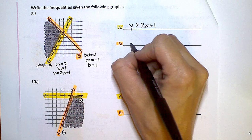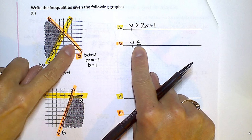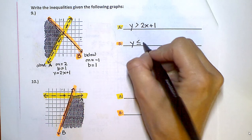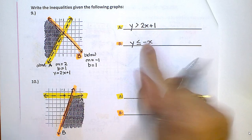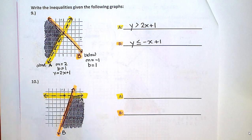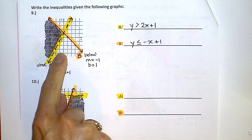So I want to put y is less than or equal to, because it's also solid, negative x because slope is negative 1. So we just put negative x plus 1. And you have just written two linear inequalities given the following graph.